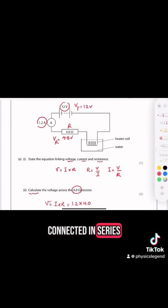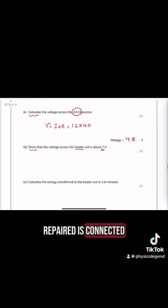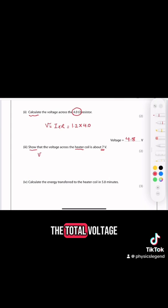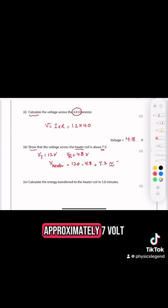The resistor and heater coil are connected in series, so the total voltage is 12 volts. Voltage across R is 4.8, so the voltage across the heater is 12 minus 4.8. So the answer is 7.2, which is approximately 7 volts.